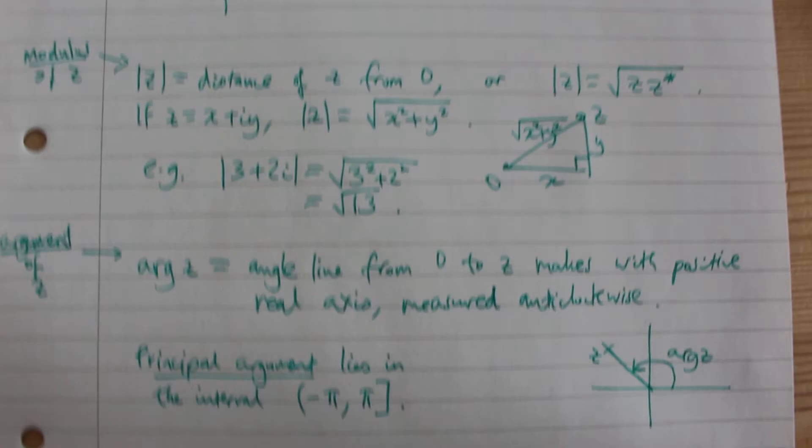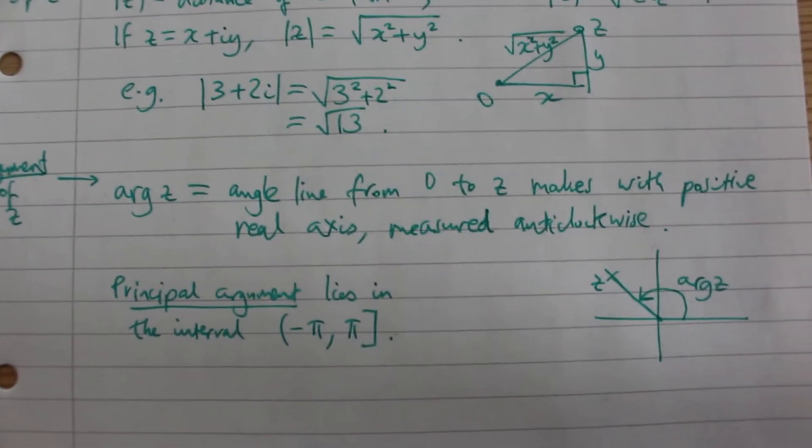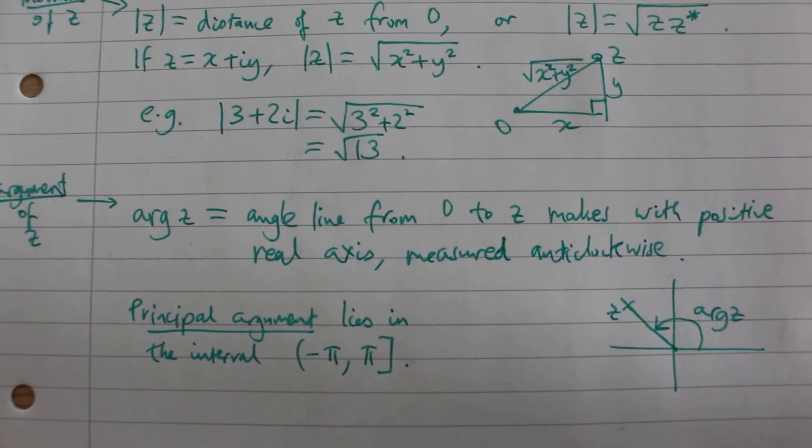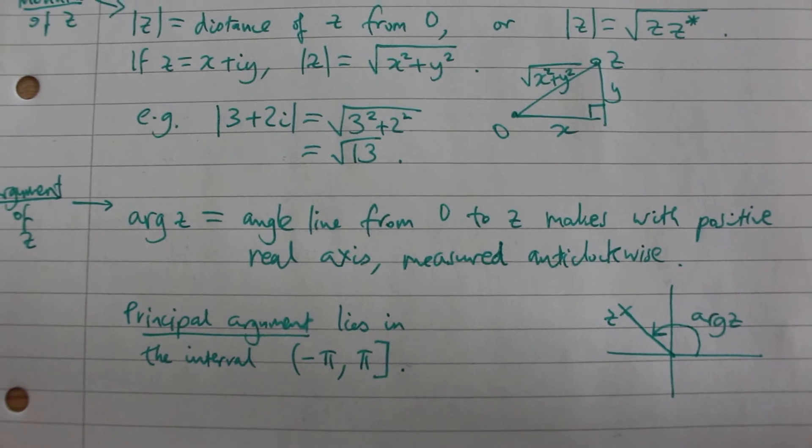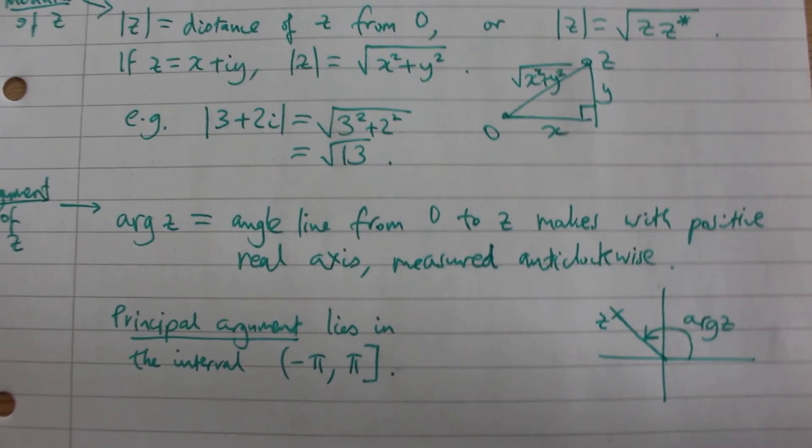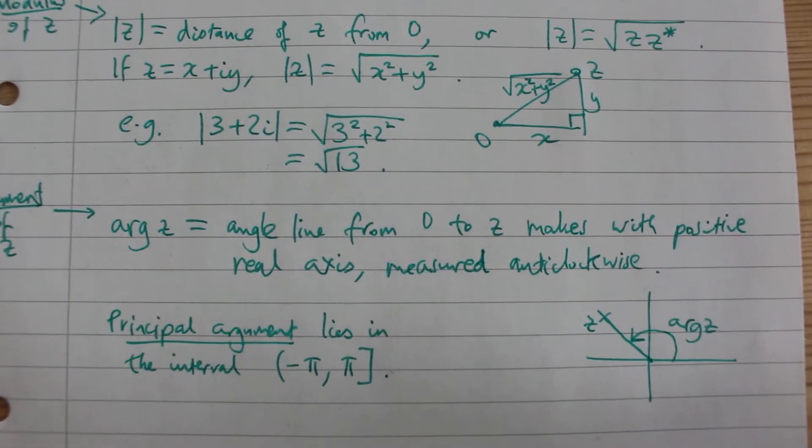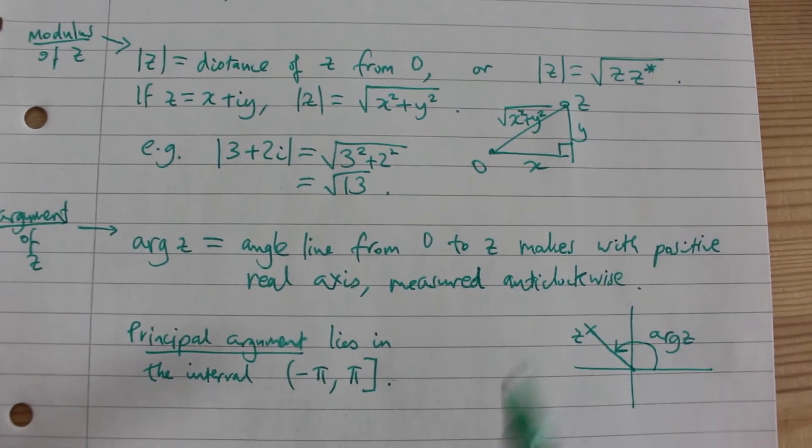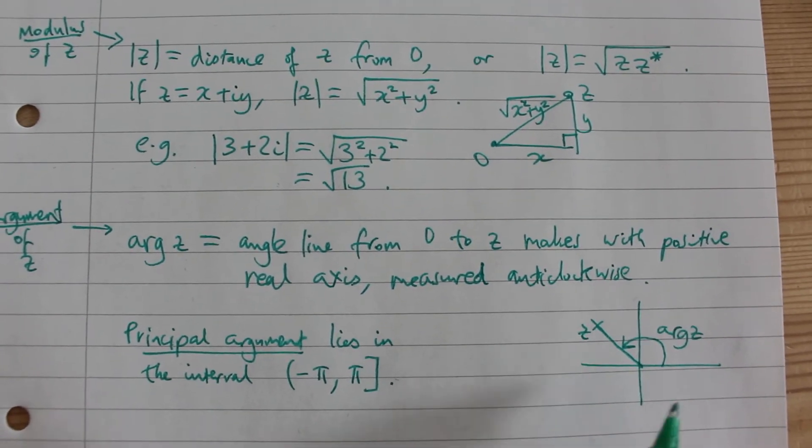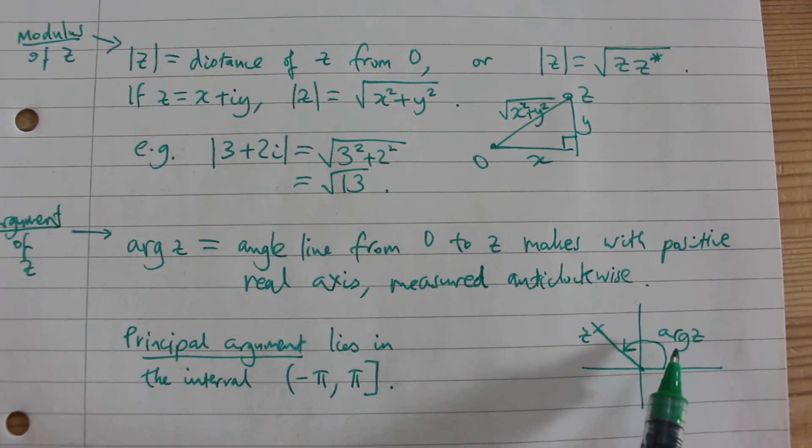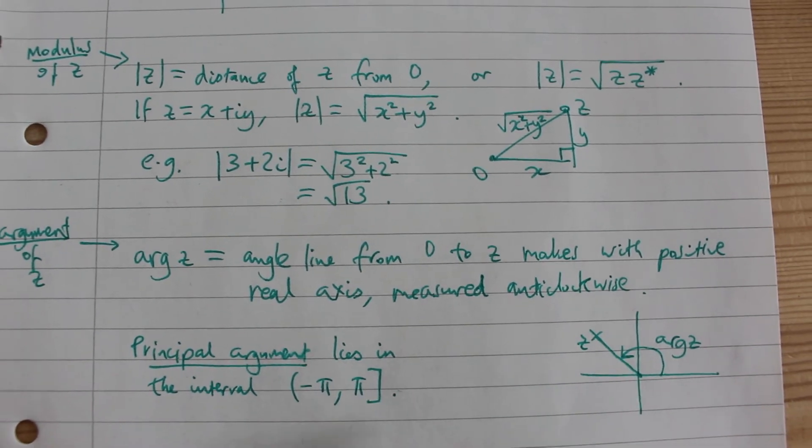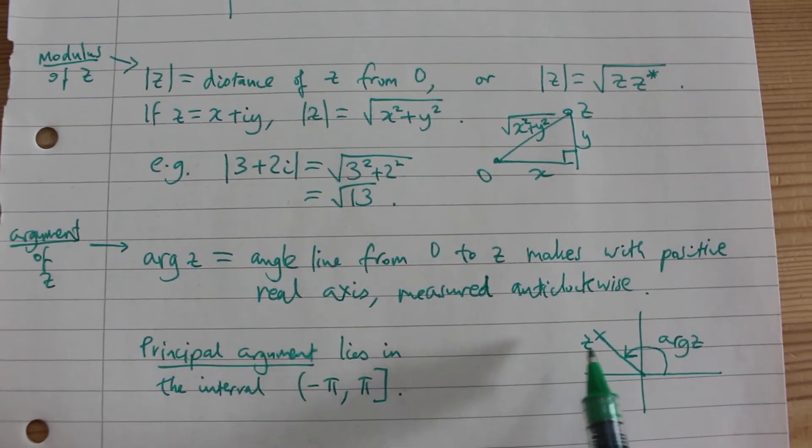We now move on to the argument of a complex number z. This is the angle that the line from 0 to z makes with the positive real axis measured anti-clockwise. So if we have a complex number z here and we measure this anti-clockwise angle, that's the argument of this complex number.